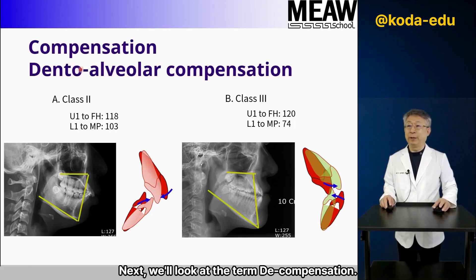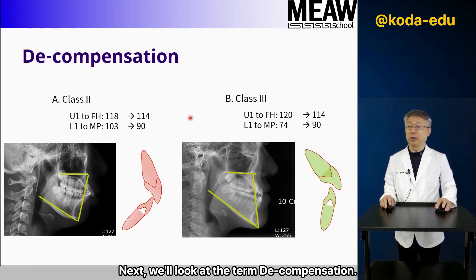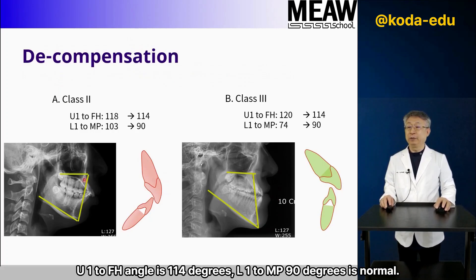Next, we'll look at the term decompensation. The normal values are: U1 to FH angle of 114 degrees and O1 to MP of 90 degrees.